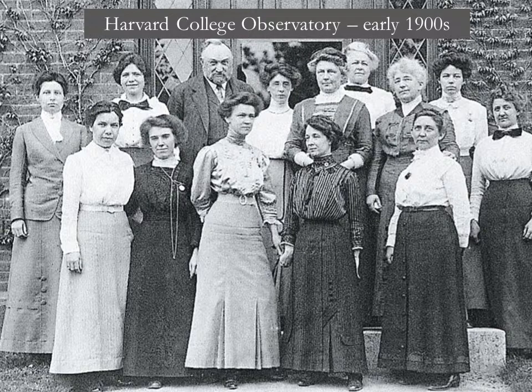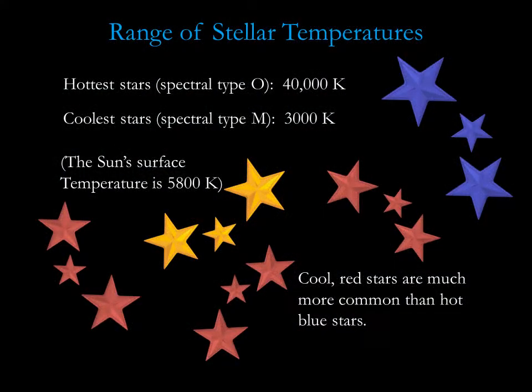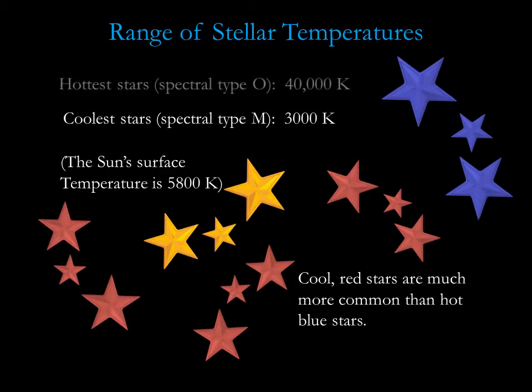The spectral type letters may seem a little random. The ordering of OBAFGKM stems from work that was done at the Harvard Observatory in the early 1900s. Stars can have surface temperatures ranging from about 3,000 Kelvin to 40,000 Kelvin. Cool red stars are much more common than hot blue stars.